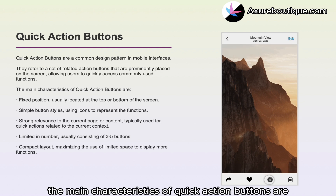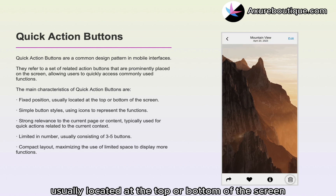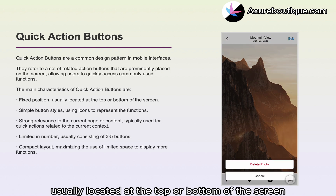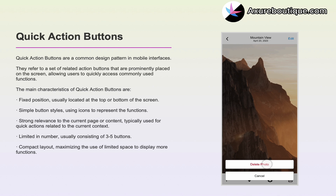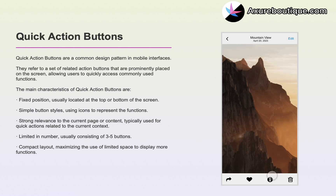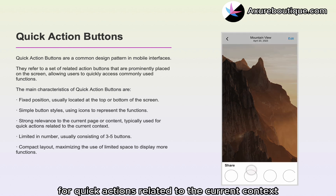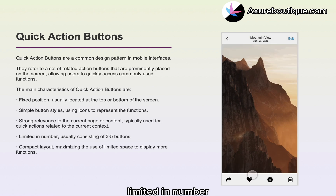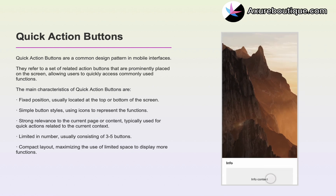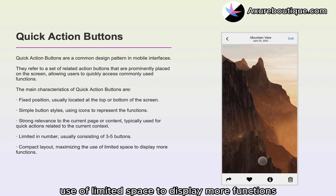The main characteristics of Quick Action Buttons are: fixed position, usually located at the top or bottom of the screen; simple button styles, using icons to represent the functions; strong relevance to the current page or content, typically used for quick actions related to the current context; limited in number, usually consisting of 3 to 5 buttons; and compact layout, maximizing the use of limited space to display more functions.